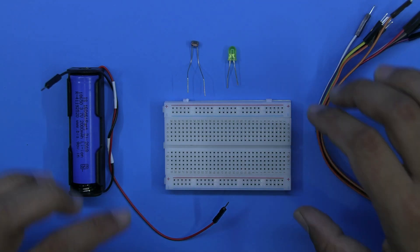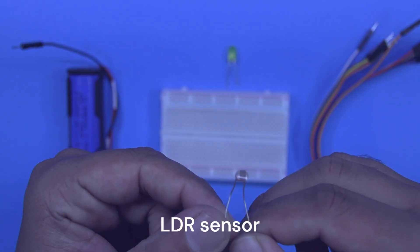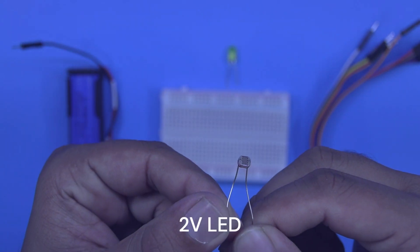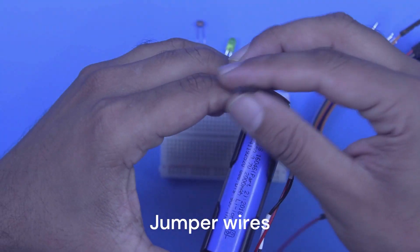For this project we'll require one breadboard with 400 pins, one LDR sensor, a 2 volt LED, 3.7 volt lithium cell, and some jumper wires.